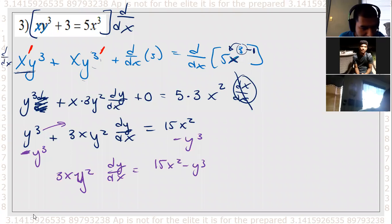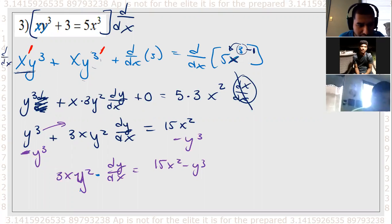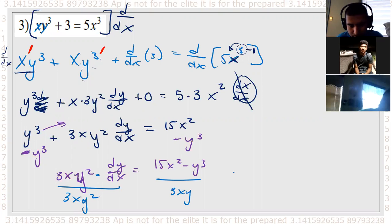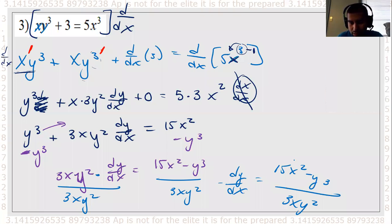This dy/dx is being multiplied by all of this so I'm going to get rid of it by division, 3xy². So my answer should be the derivative dy/dx equals 15x² minus y³ over 3xy². This is our solution.